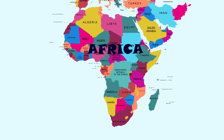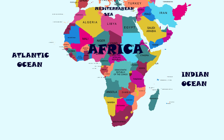Africa is the second largest continent of the Earth. The continent is surrounded by the Mediterranean Sea to the north, the Indian Ocean to the south-east, and the Atlantic Ocean to the west.